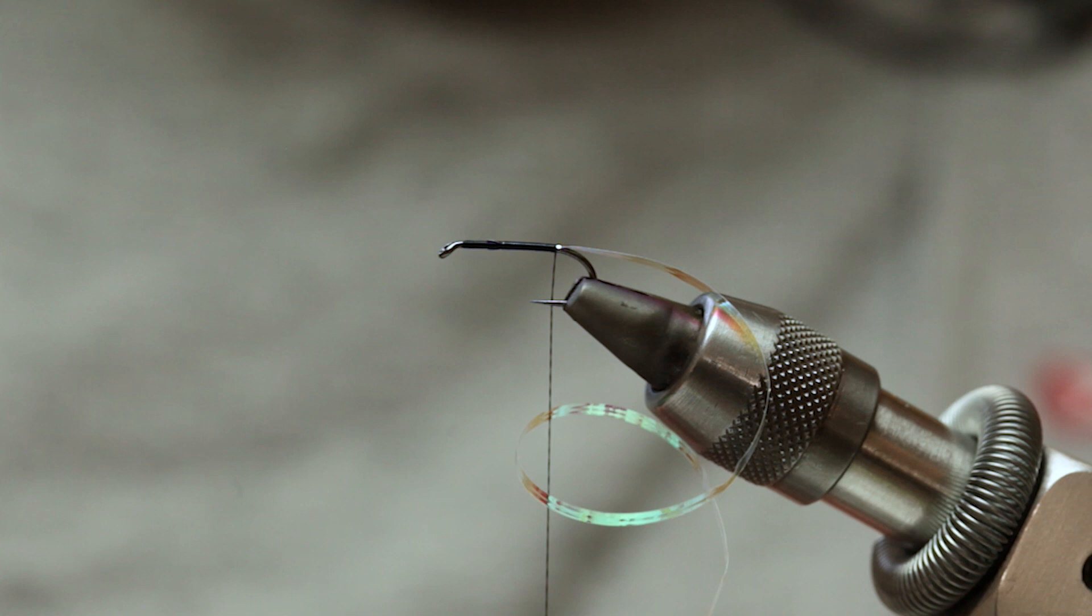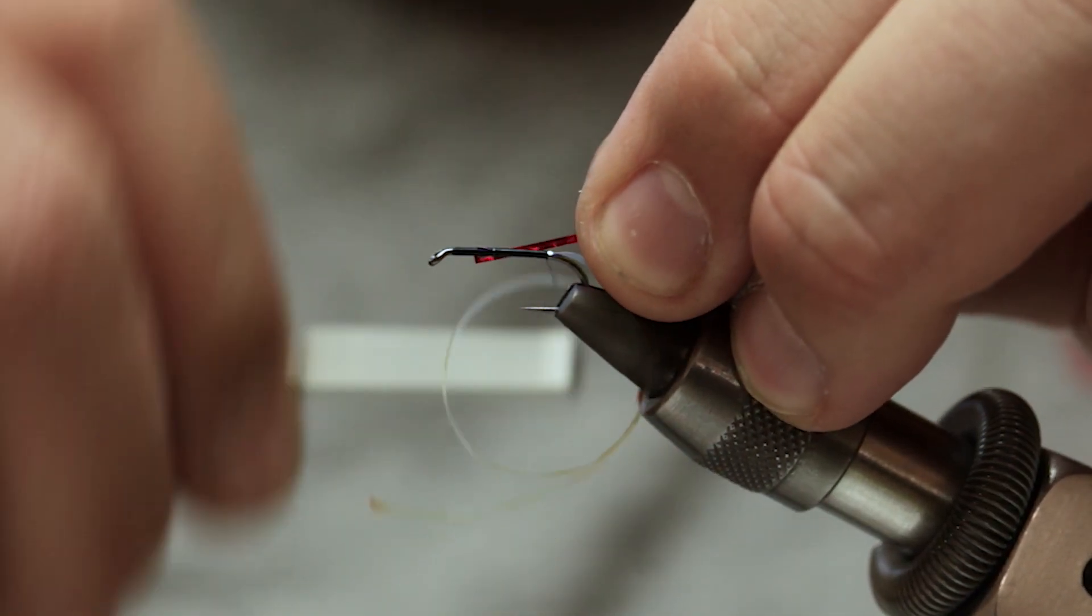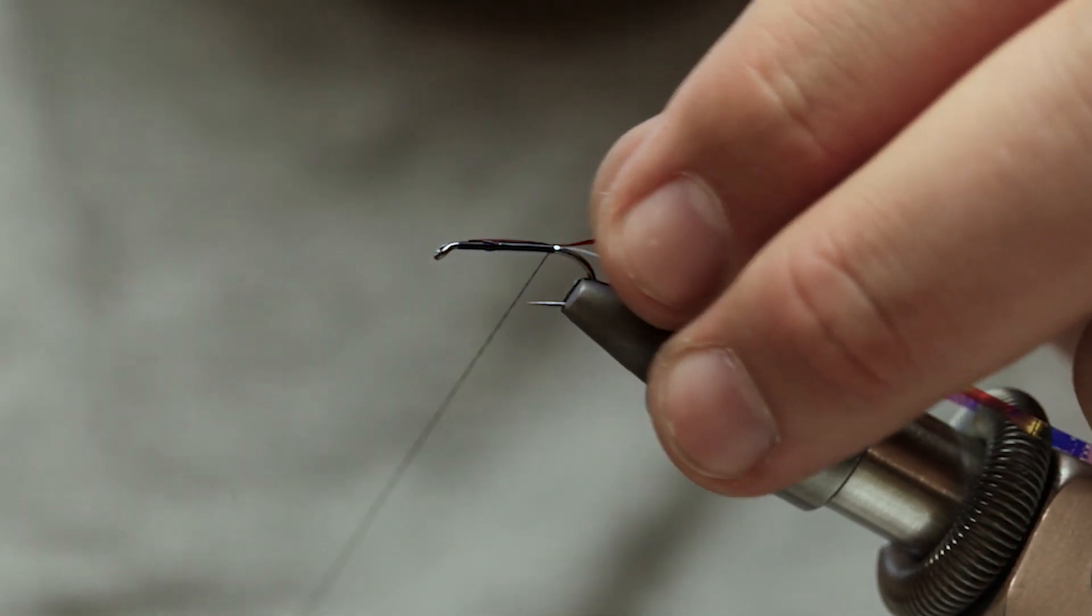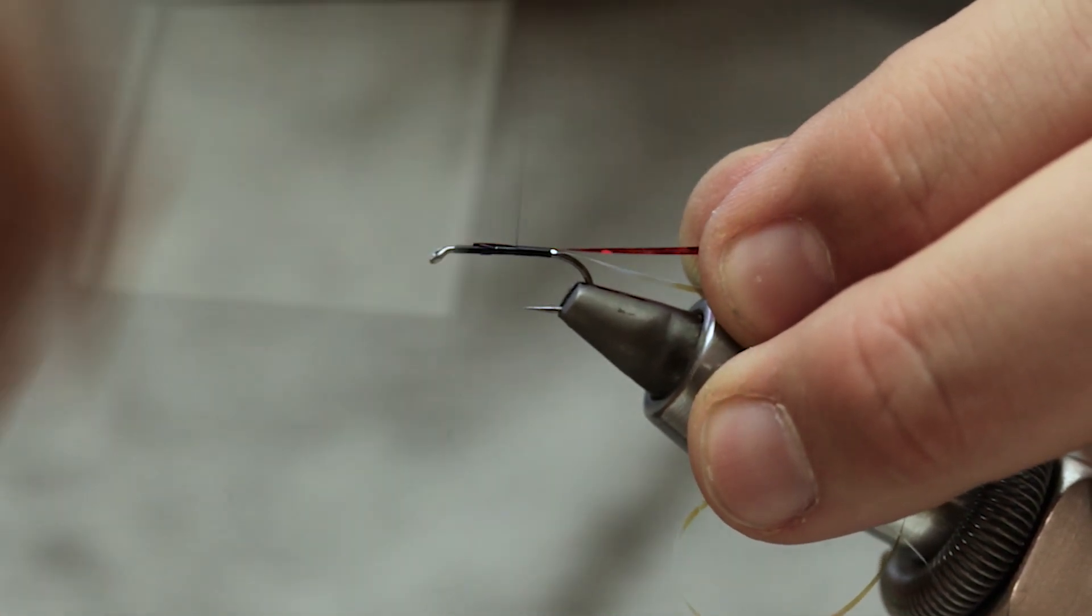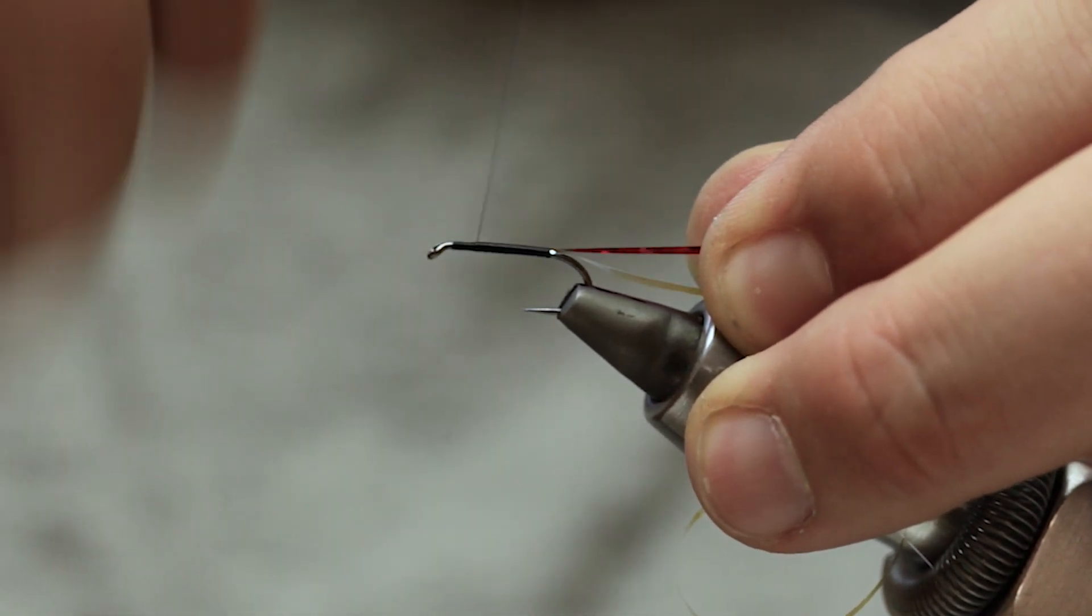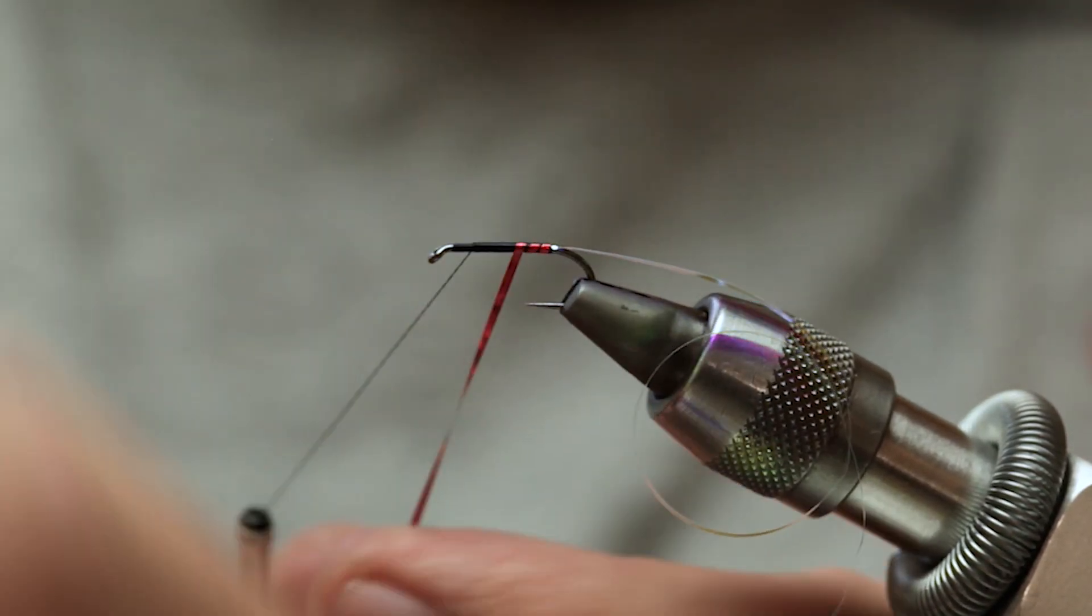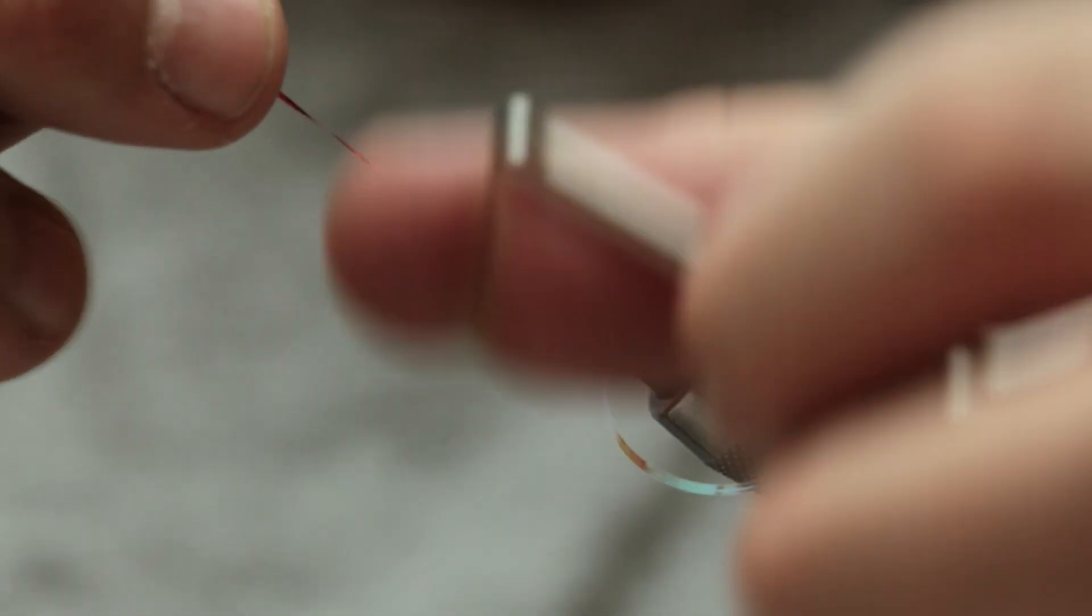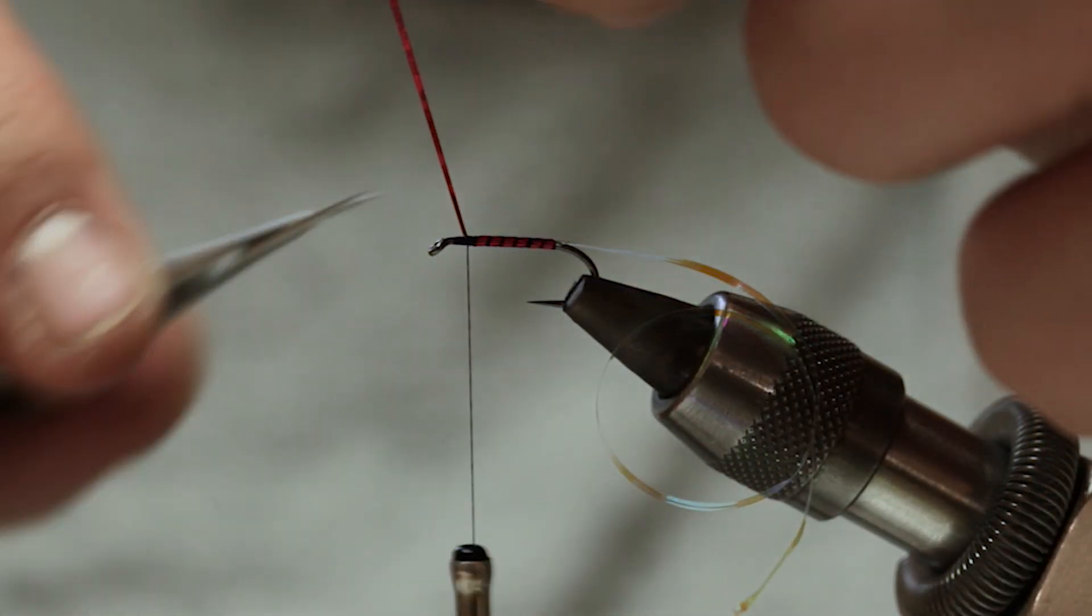On the way back up then, I'm going to catch in the red holographic. Get out of there, and then rib the body. Catch off.